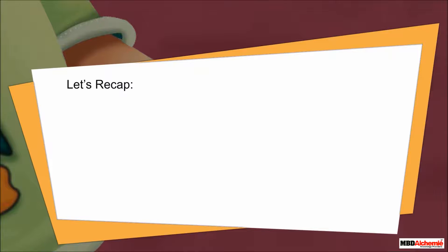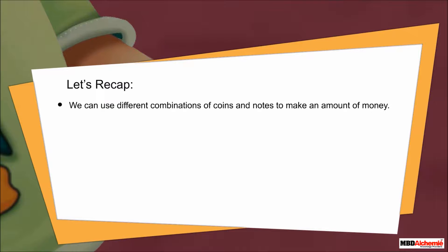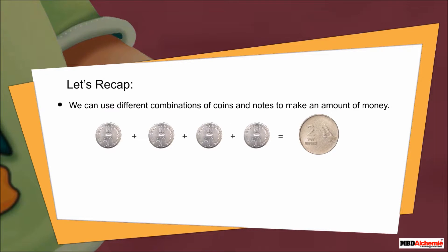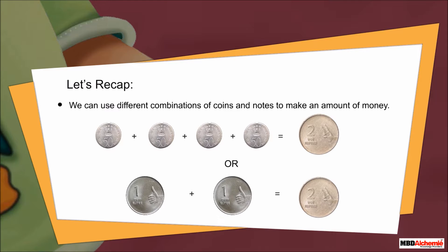Let's recap. We can use different combinations of coins and notes to make an amount of money. Like, 4 fifty-paise coins make 2 rupees. Or, 2 one-rupee coins or notes make 2 rupees. And so on.